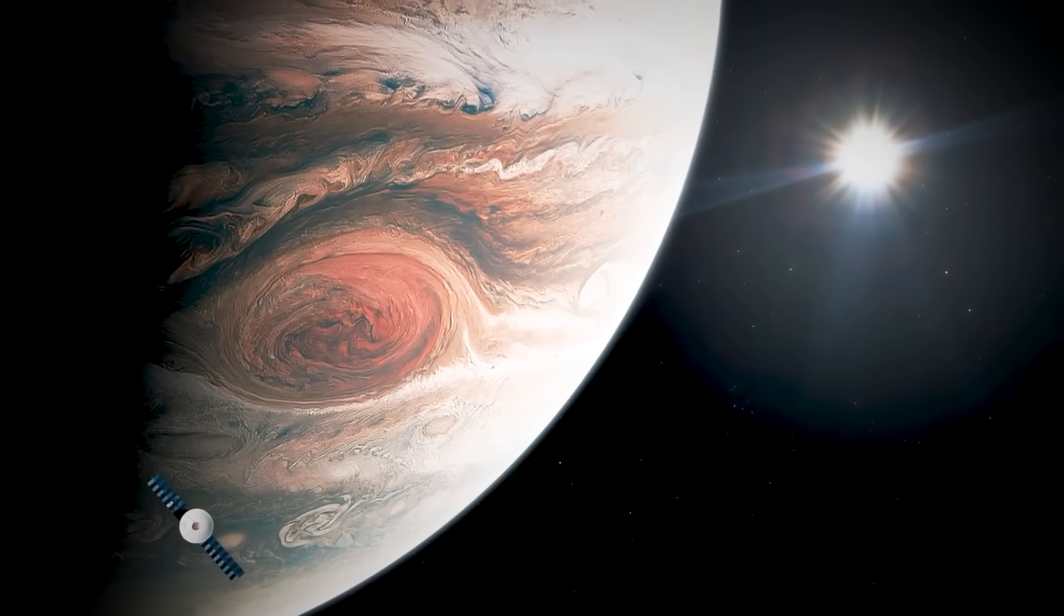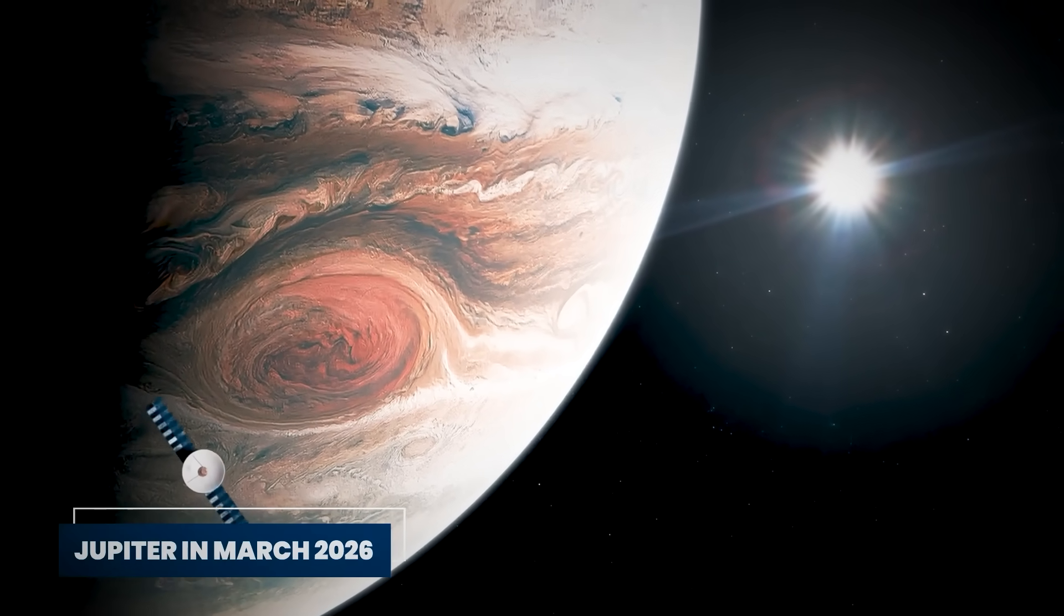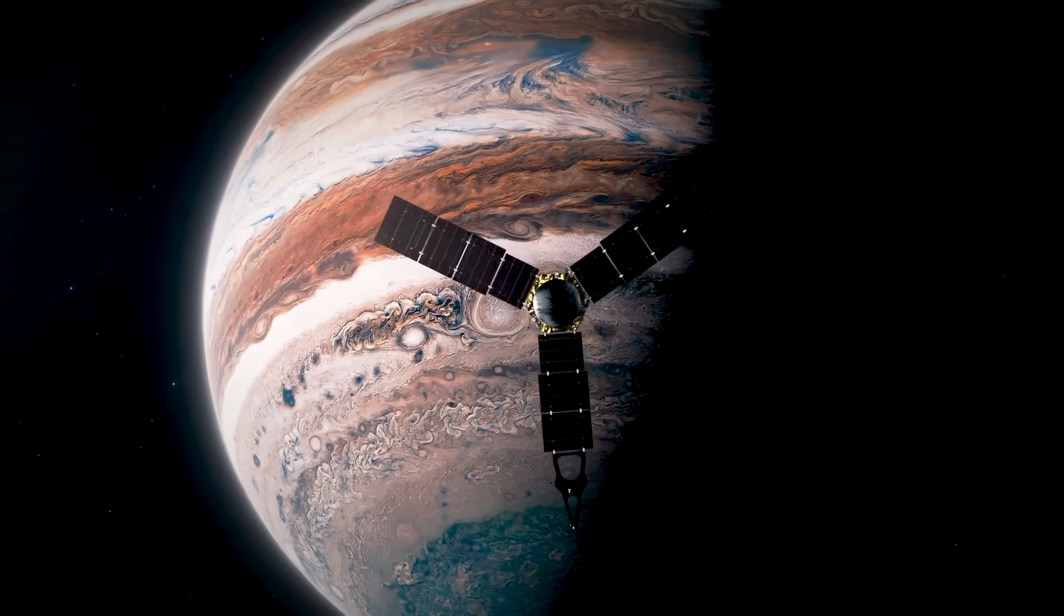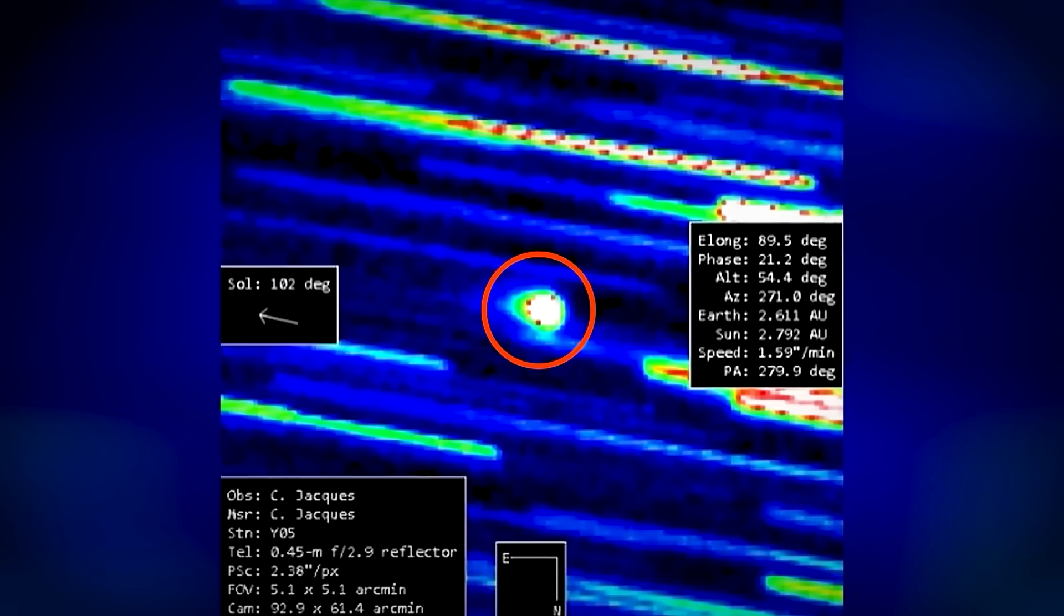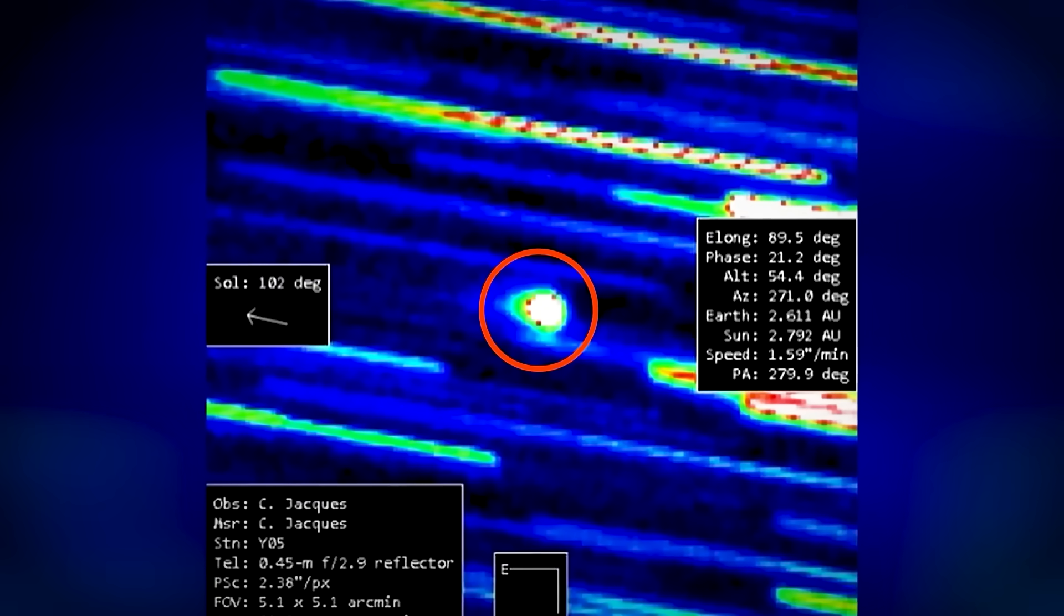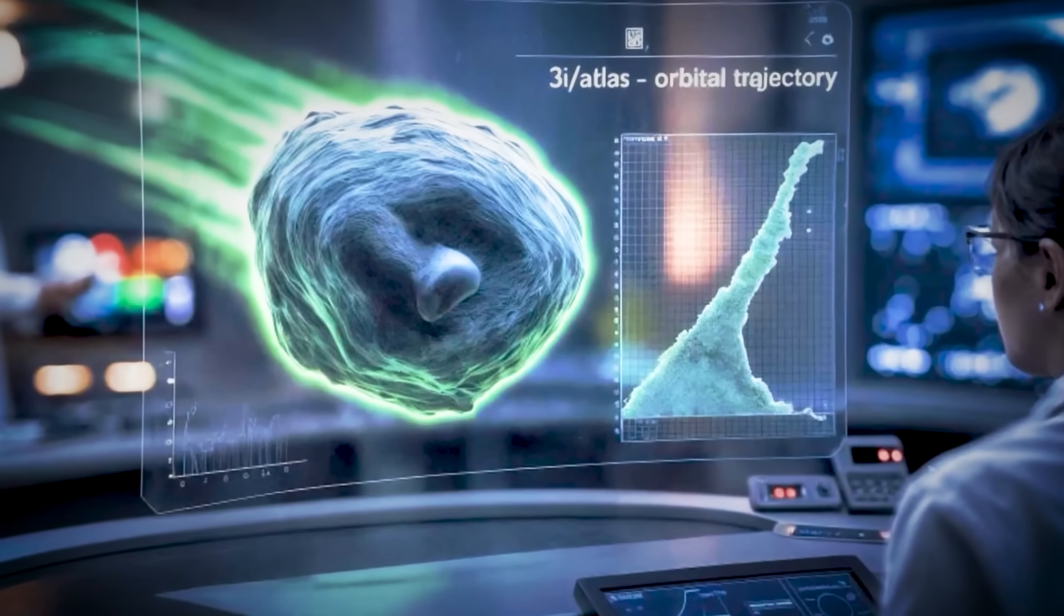The object's trajectory will take it past Jupiter in March 2026, where NASA's Juno spacecraft might be able to sample its dust trail. This could be our only chance to collect actual material from another star system and analyze it in detail. But here's what's really keeping scientists awake at night.